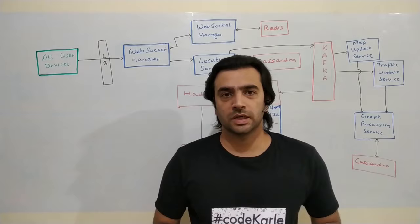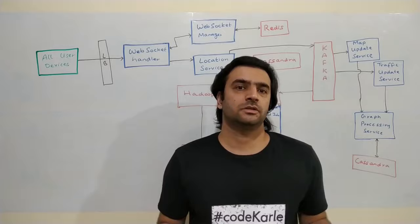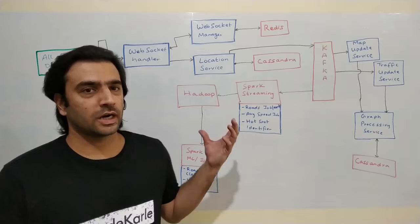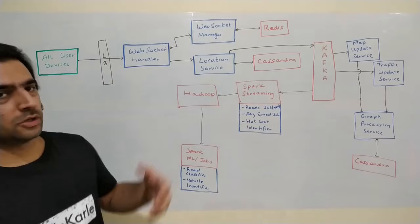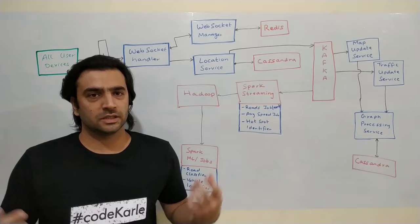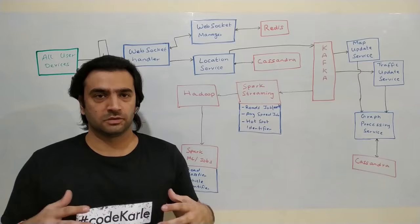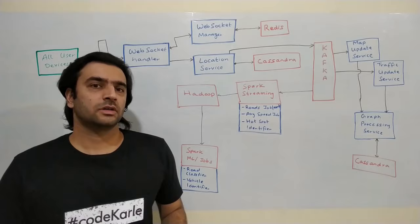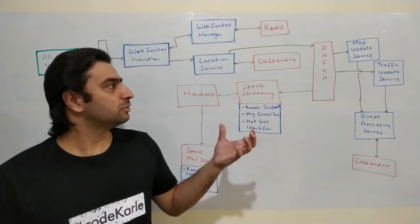The web socket handler service talks to all user devices. Normally there would be thousands of such machines. A web socket manager keeps track of which handler machine is connected to which device, storing that mapping in Redis. If that information is lost, we can pull it again from the service — no need for a persistent store. As users send their locations, the device's location ping comes to the location service.